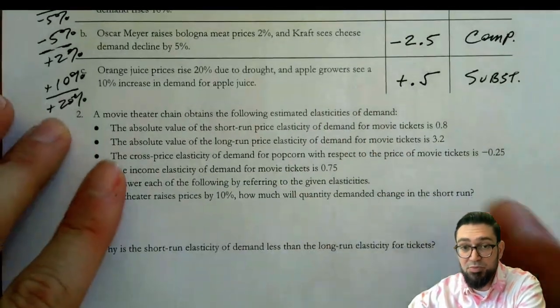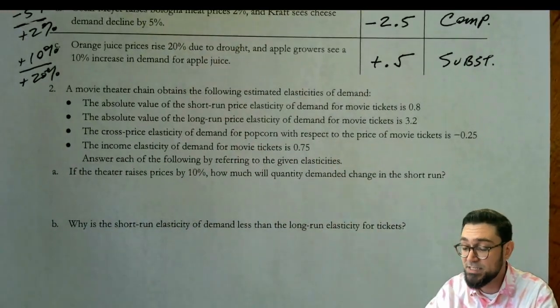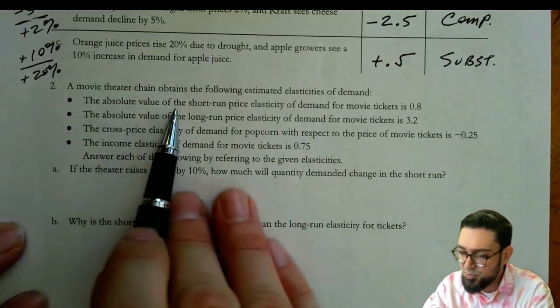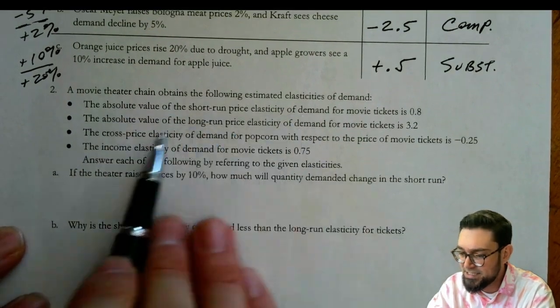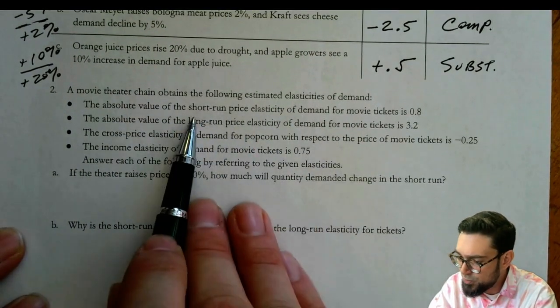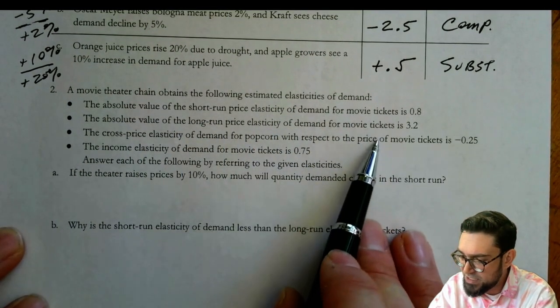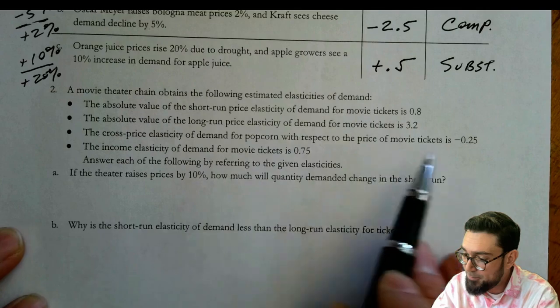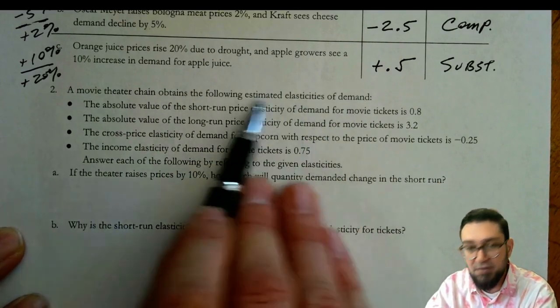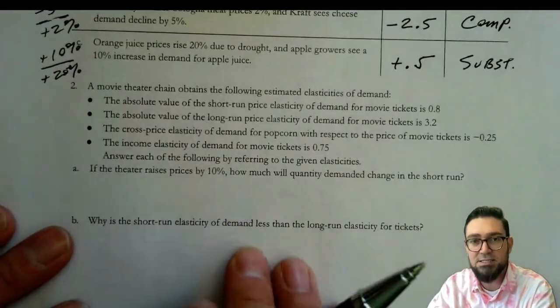Now, number two is all one big honking problem. And this is actually an AP exam problem. So let's see how we do. Gives us a bunch of specific information about elasticities of demand, value of short run, long run of demand for tickets, and cross price for popcorn and tickets, income elasticity for the tickets. Gave us a bunch of info. So we're going to need some of that when we go to answer these.